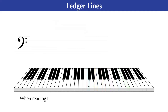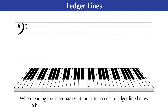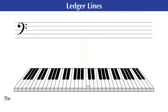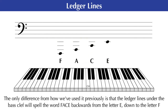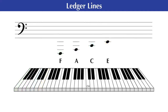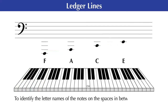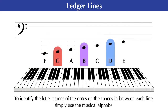And finally, when reading the letter names of the notes on each ledger line below a bass clef, we can once again simply use the word FACE. However, the only difference from how we've used it previously is that the ledger lines under the bass clef will spell the word FACE backwards from the letter E down to the letter F. As is the case with all of the ledger lines discussed in this video, to identify the letter names of the notes on the spaces in between each line, simply use the musical alphabet.